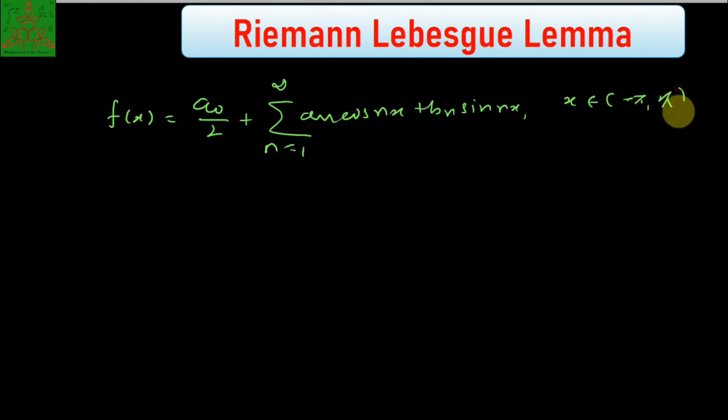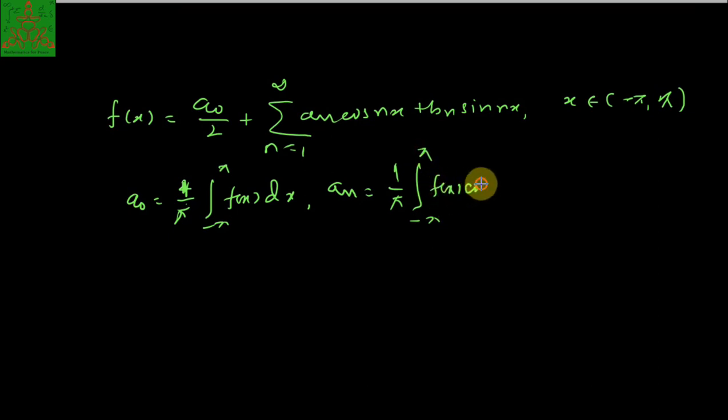If your function is a Riemann integrable function, then a₀ can be written as 1/π times the integral from -π to π of f(x) dx. Similarly, aₙ is 1/π times the integral from -π to π of f(x) cos(nx) dx, and bₙ is 1/π times the integral from -π to π of f(x) sin(nx) dx.